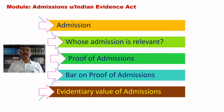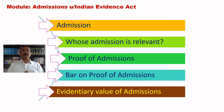Thereafter, the proof of such admissions will be looked into. There are also certain admissions where proof by way of admission is disallowed — that means there are certain bars upon such admissions. And lastly, we will be looking into the evidentiary value of admissions.